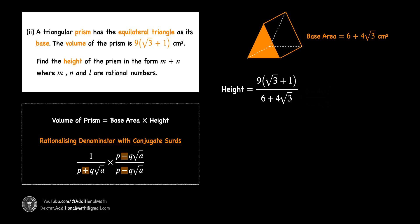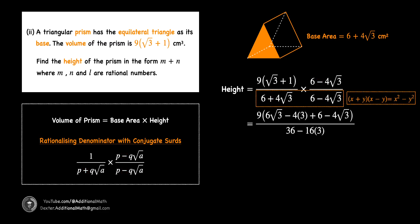With that, we multiply our conjugate surd to both numerator and denominator, where the conjugate is determined by replicating the same terms in the denominator and changing the operator from positive to negative. This allows us to use the special algebraic identity (x + y)(x - y) = x² - y² to remove all surds in the denominator.